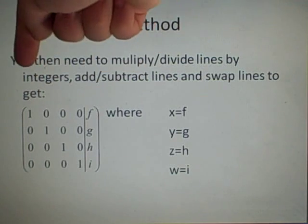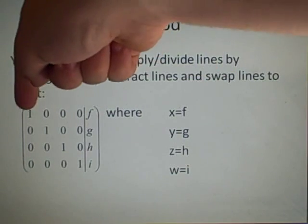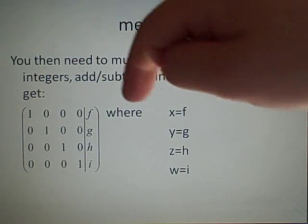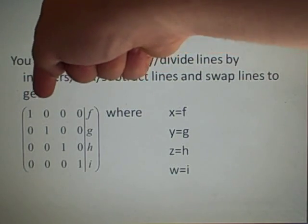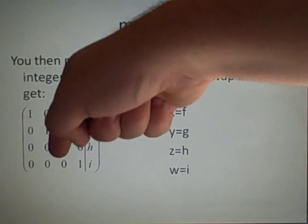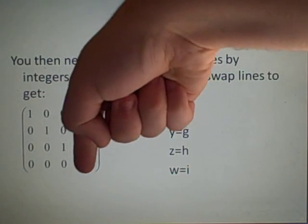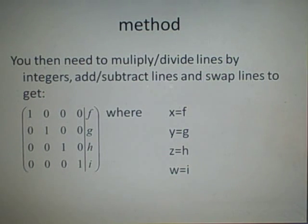Because this was our x column, we've got 1x, so x is f. This is our y, so we've got y is g, z is h, w is i. And that's how you solve them.